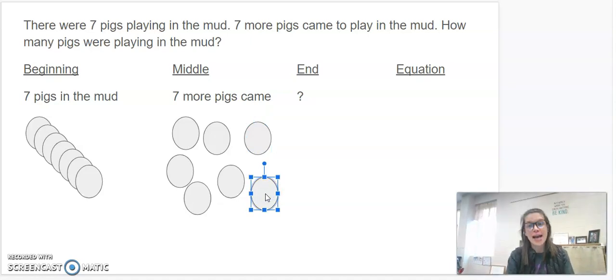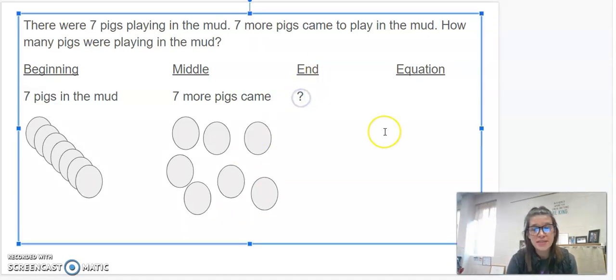I got 14 again. So, since I used two different strategies, and I got the same ending answer, I'm pretty sure that there were 14 pigs. So, underneath the question mark, I'm going to type 14 pigs.